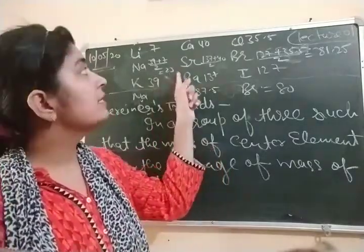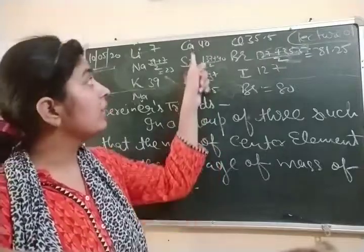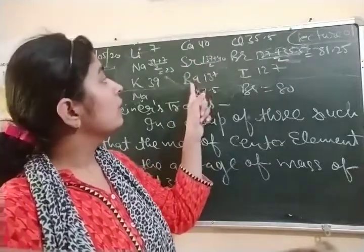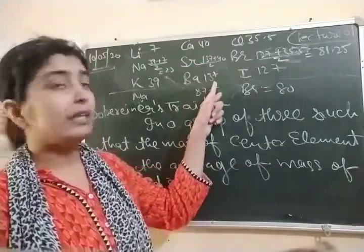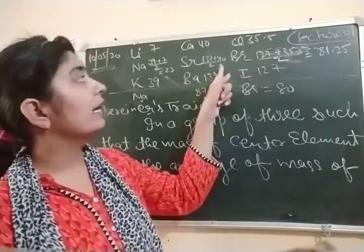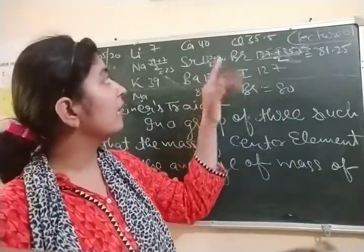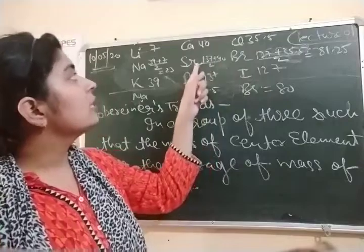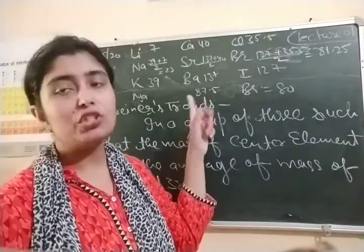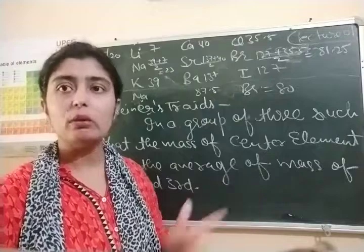Same for the third example: he took calcium, strontium, and barium. Calcium's mass is 40, barium's mass is 137. The calculated average is approximately 88.5. But actually, strontium's mass is 87.5. So the difference is not much, and this term was quite correct.